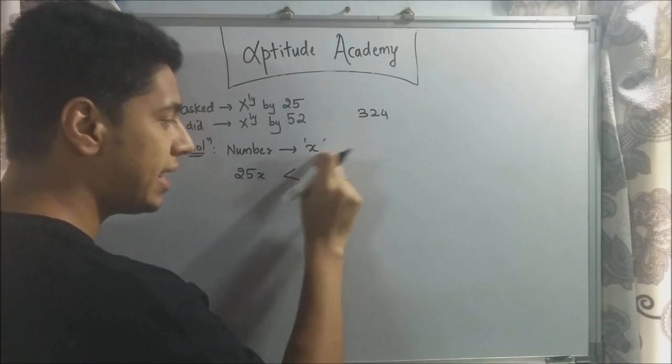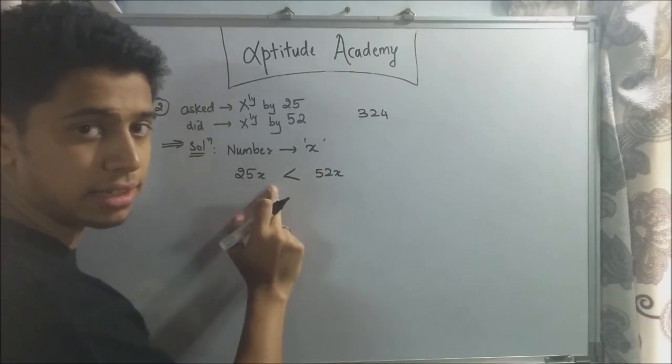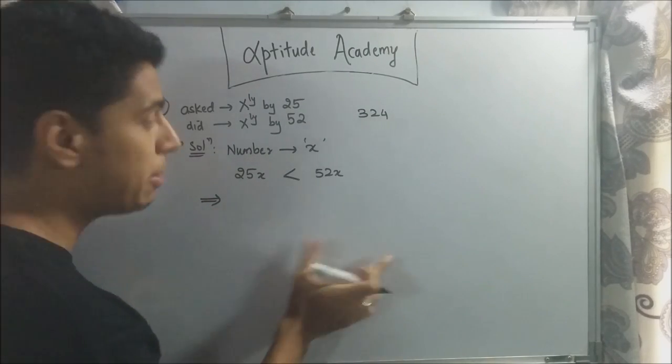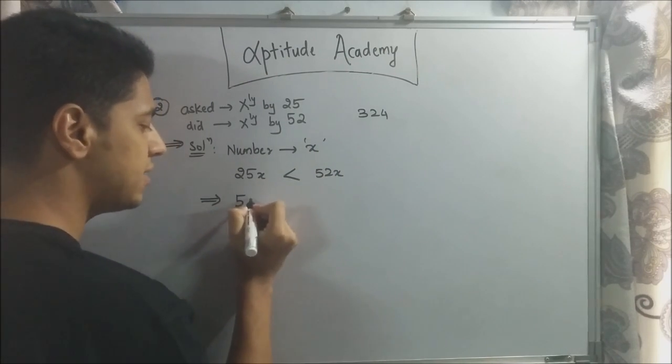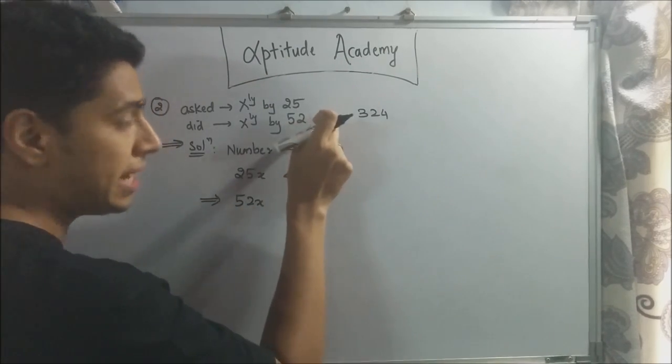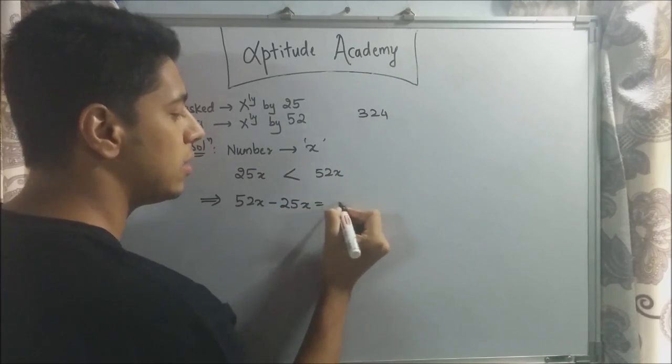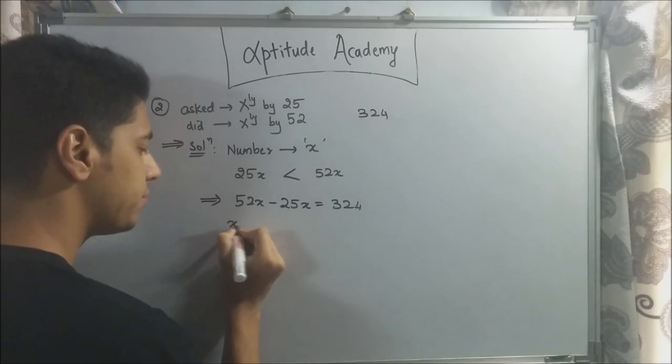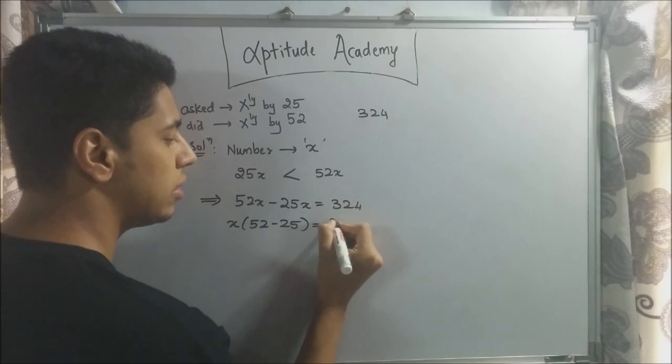What they have said is the answer that he got by multiplying it is 324 more than the expected answer. So basically, in this type of problem, what you need to do is form an equation. Then be just one unknown, you just solve it and you get your answer. So what they are saying is 52x, the number that he actually got, minus the expected result, 25x, is equal to 324. Now, we take x common here, so it will be 52 minus 25 is equal to 324.